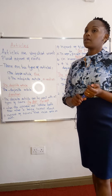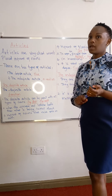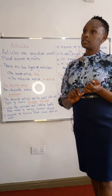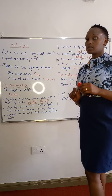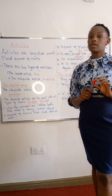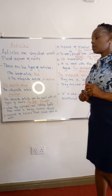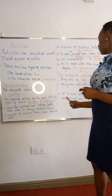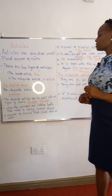'A' is used when something is mentioned for the first time. Someone can come in and say, 'I have seen a very beautiful lady standing outside.' This person has seen that lady for the first time, and that is why they have used the indefinite article 'a'.